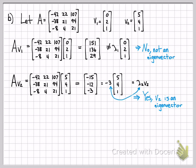And in fact, we now know that the eigenvalue associated with that eigenvector is lambda 2 equals negative 3.